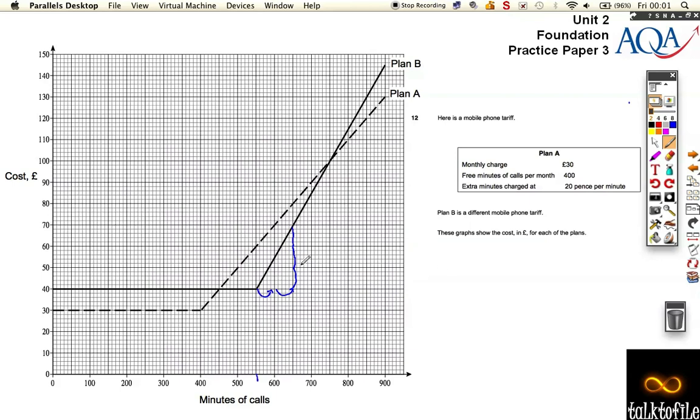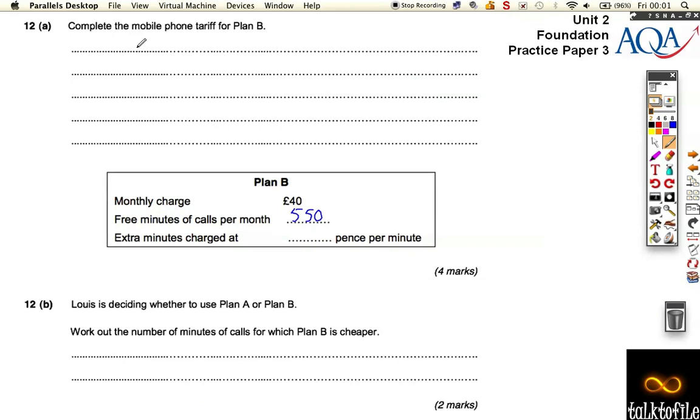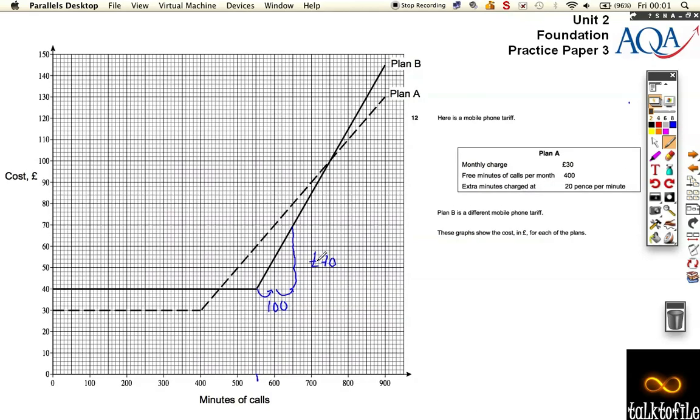So there's 100 minutes across and it's gone up from £40, it's gone up three, so it's gone up £70. So let's remember that. So it's gone up, so 100 minutes—100 extra minutes.